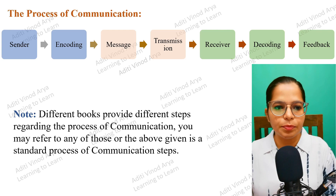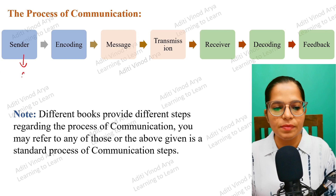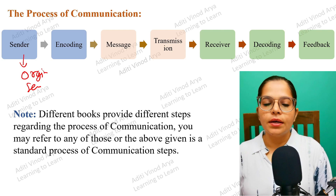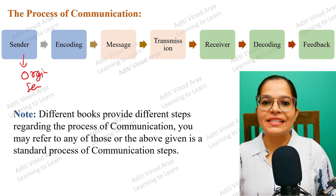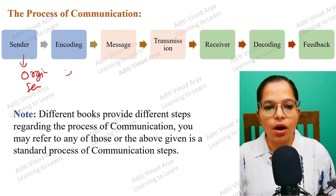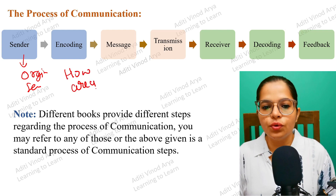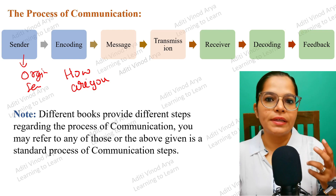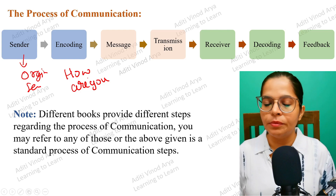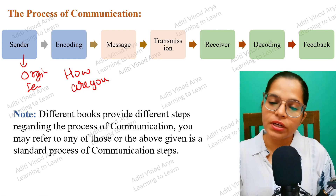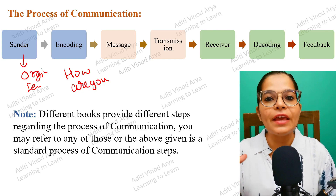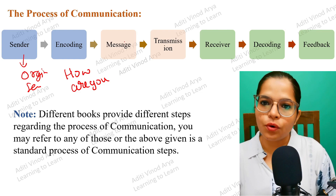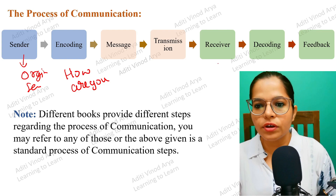A quick recap: the Sender is the person who originates and sends the message — they have the idea in mind. Encoding is the process of deciding how you are going to communicate: whether it will be verbal, non-verbal, or telephonic communication, what words to use, when to communicate. When you formulate all of this, that is called encoding.